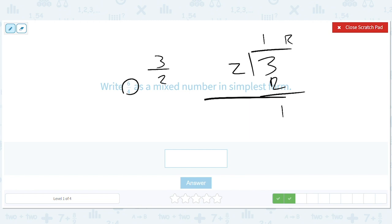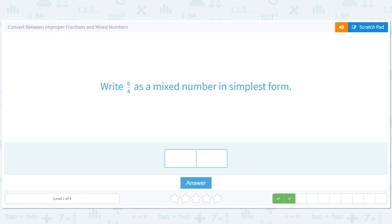2 doesn't go into 1. So, we have a remainder of 1. And so, we say 1 and 1 half. So, 1 space 1 forward slash 2.